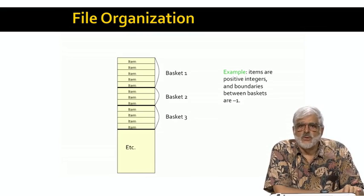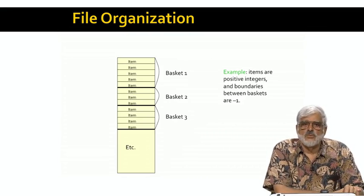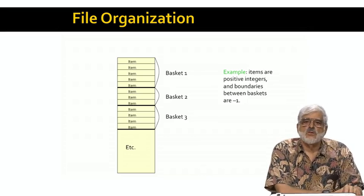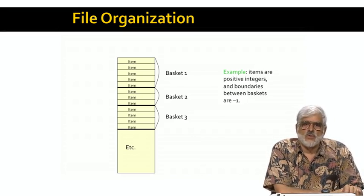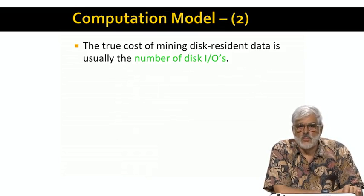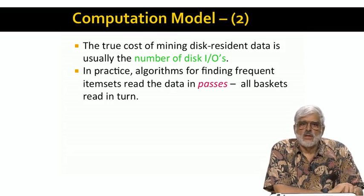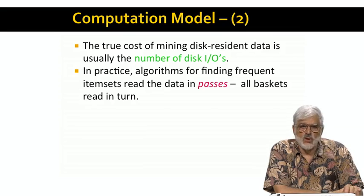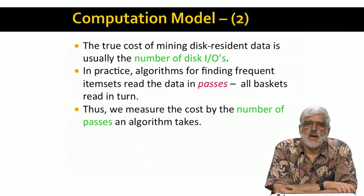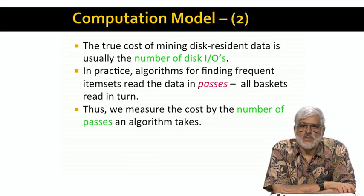So here's a picture of what we imagine the file looks like. Items have been coded as integers, so the file is a sequence of integers. We need a way to indicate where one basket ends and the next begins. So we might use an integer like minus one, which we suppose can't represent an item, as the separator for baskets. As we mentioned, we can focus on the number of times a disk block is moved between disk and main memory. It turns out that the algorithms we will study each operate in passes. During a pass, the entire file is read block by block in order. A surrogate for the cost of the algorithm is thus the number of passes. The number of disk IOs is that number, number of passes, times the number of blocks that the file of the baskets occupies.